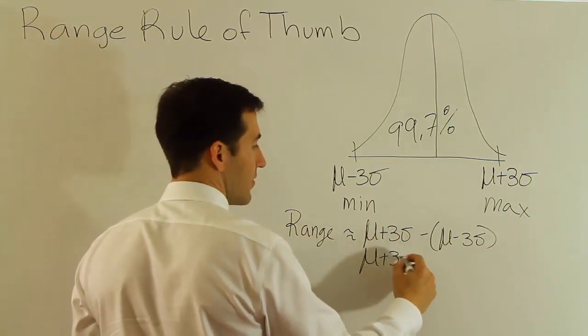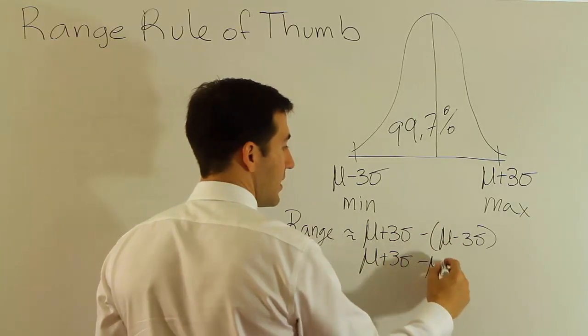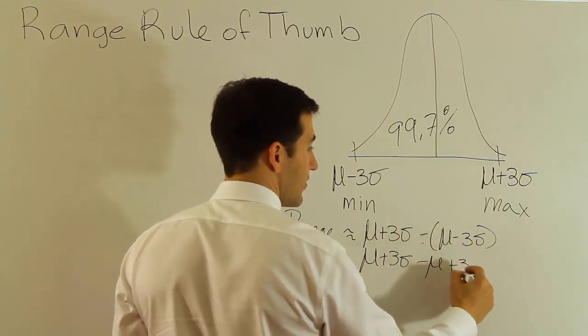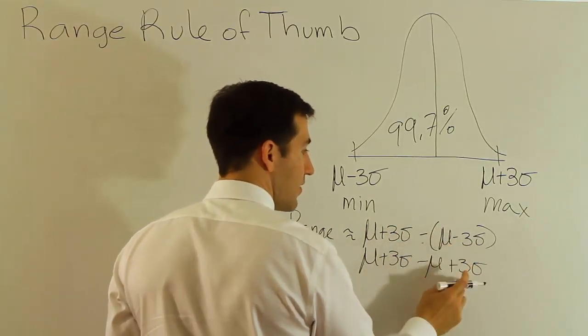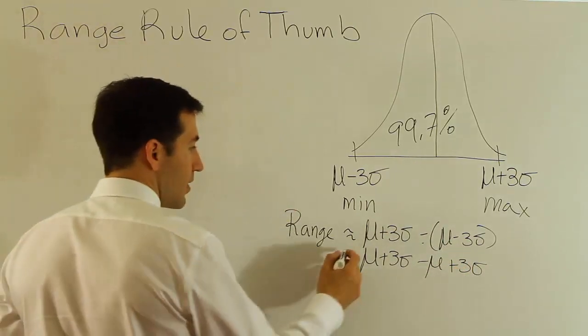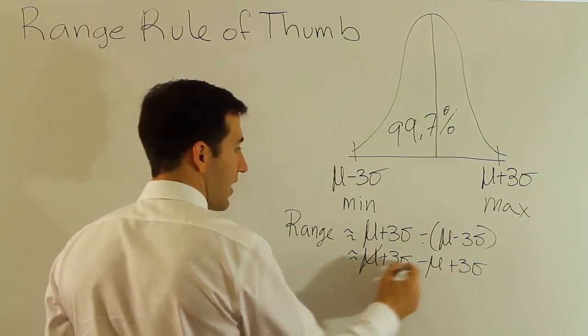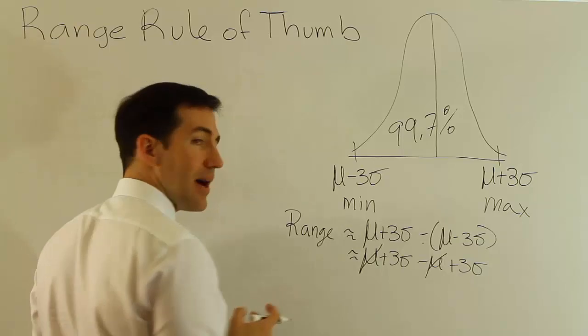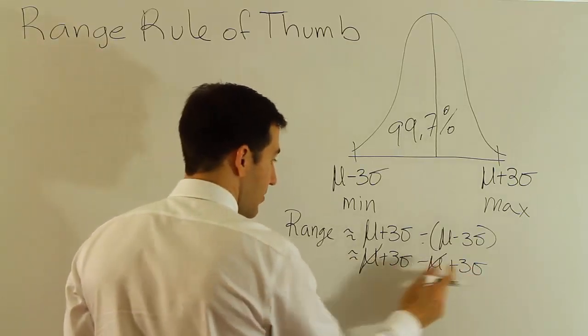I'd get the mean plus three standard deviations minus the mean plus three standard deviations, right? Because negative times negative makes a positive. And then what you would say is that the means cancel out because one is negative, one is positive.